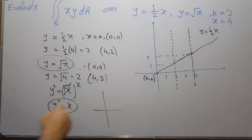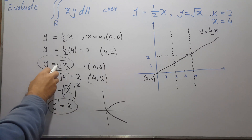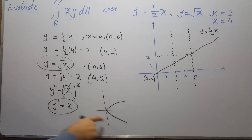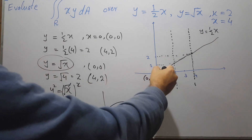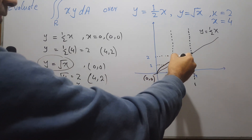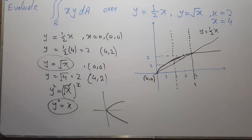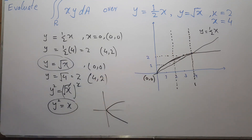Since in the equation y equals √x, y is only positive, we only draw the upper half of the parabola. The curve goes through the origin and must touch the point (4, 2), which matches our x limits.